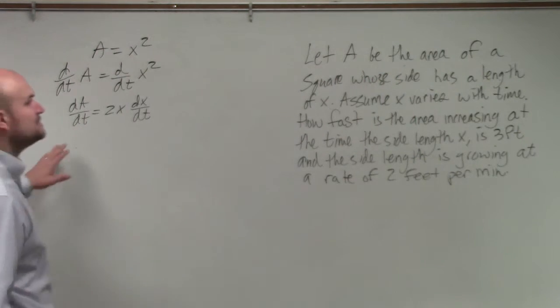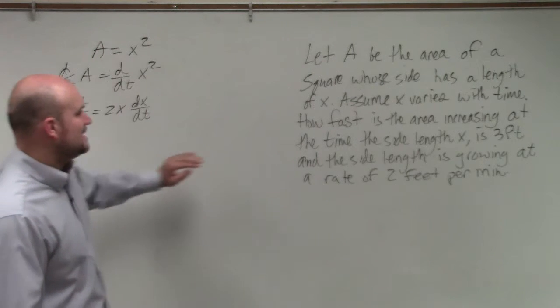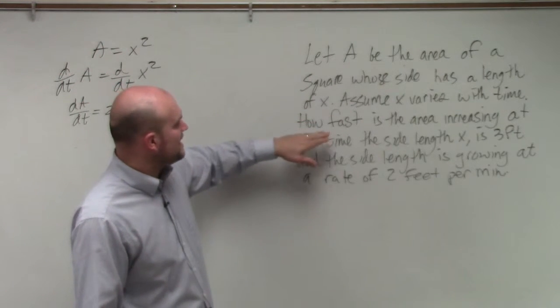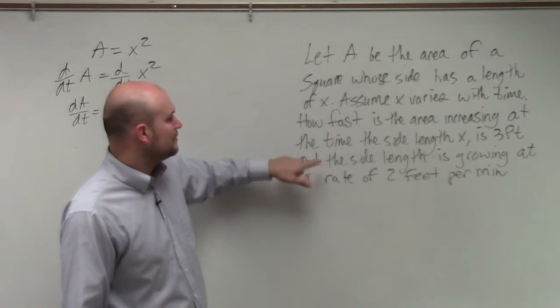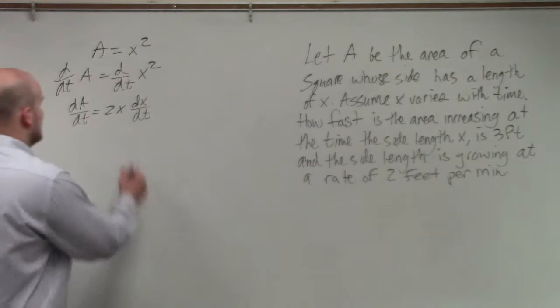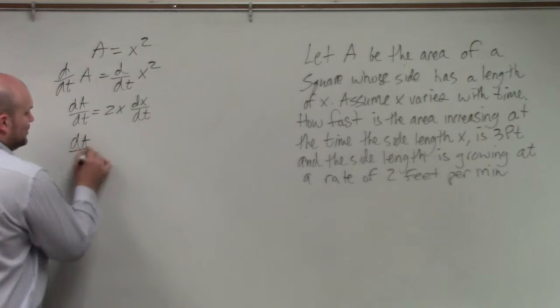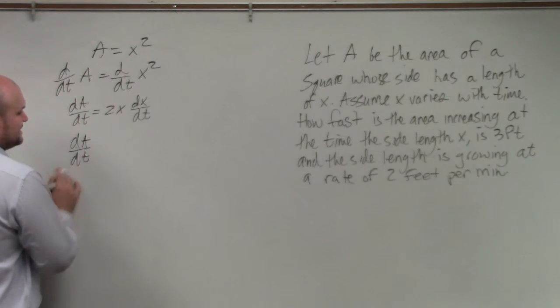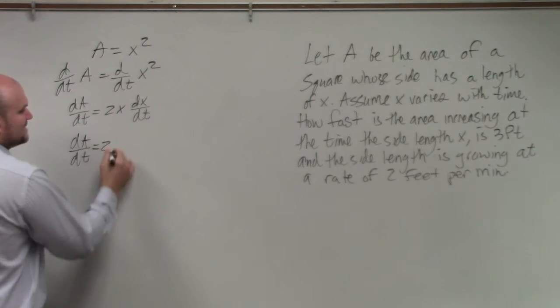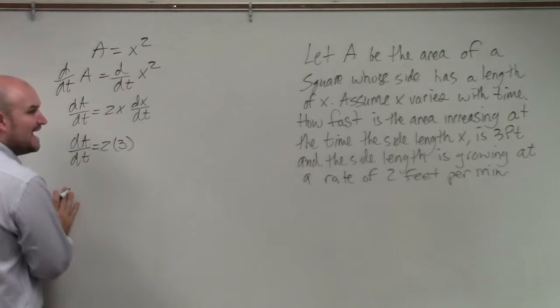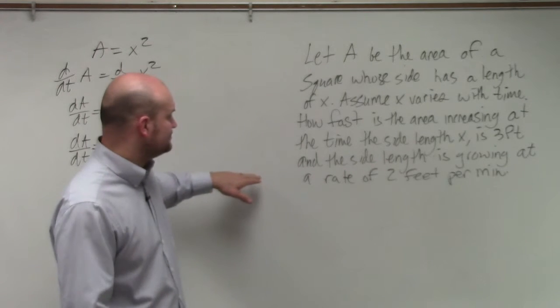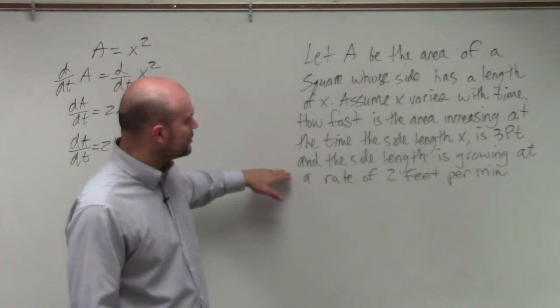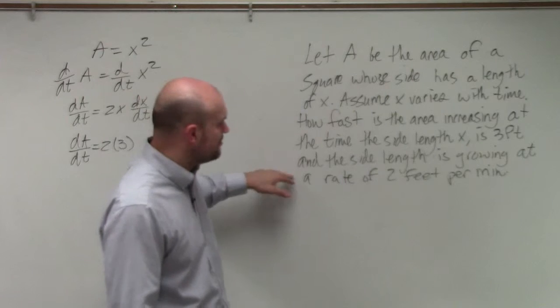So now let's look for the information that we have. It says, assume X varies with time. How fast is the area increasing at the time the side length X is 3 feet? So we know that. So we're looking for the change in dA/dt. And we know that X, they're looking for that change when the side length is 3. And the side length is growing at a rate of 2 feet per minute.